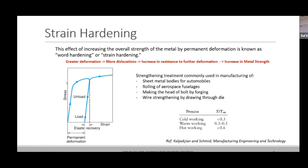Strain hardening is the property by virtue of which you increase the strength of the material through permanent deformation. In the stress-strain diagram of a ductile material, once the yield limit is crossed and yielding takes place, the material is not undergoing perfectly plastic deformation — it is also increasing its strength. You see the stress increasing as strain increases.